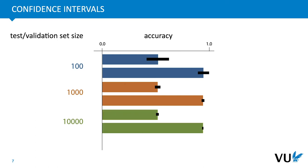Around 10,000 instances, the confidence interval becomes so small it's barely visible in a plot. The takeaway is that if our test set is very small, we can't confidently tell the difference between a model with 50% accuracy and one with 55% accuracy. That means we can't confidently choose between two models with those performances. That's why it's so important to have a large test set — without one, you can't even tell whether your model is properly training or not.